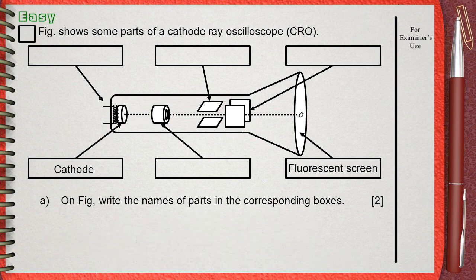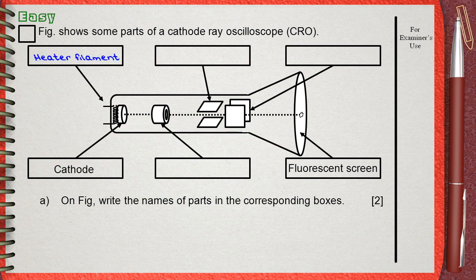Starting from the top left box, the arrow points to the heater filament, the small coil behind the cathode. The top box in the middle points to the two parallel horizontal plates, which are the Y plates.